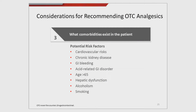The third consideration: what comorbidities exist in the patient? Let's look at some specific ones. Cardiovascular risks such as coronary artery disease or hypertension can increase with the use of NSAIDs. What about chronic kidney disease? If their GFR falls below 60 and they move into stage 3 chronic kidney disease, you have to be careful in selecting medications. GI bleeding risk is increased with NSAID use, and that risk is even higher when NSAIDs are combined with other medications like anticoagulants, steroids, or multiple NSAIDs such as aspirin and ibuprofen. With acid-related GI disorders, we know that 30% of NSAID users have gastric ulcerations, and a third of OA patients use an NSAID every day.